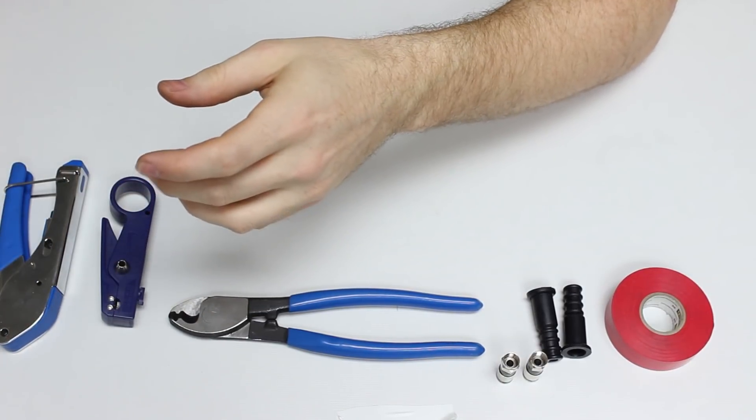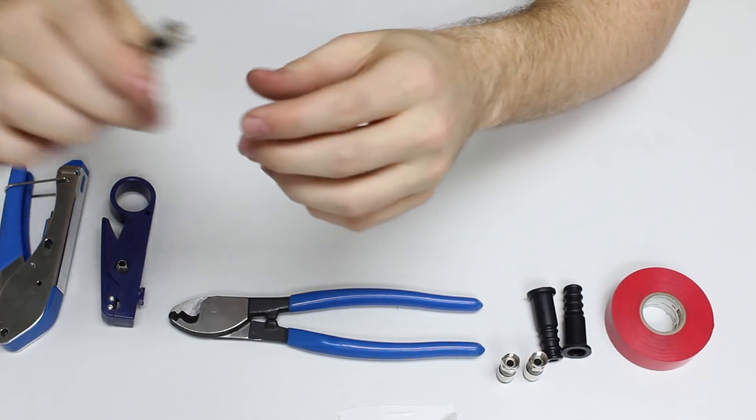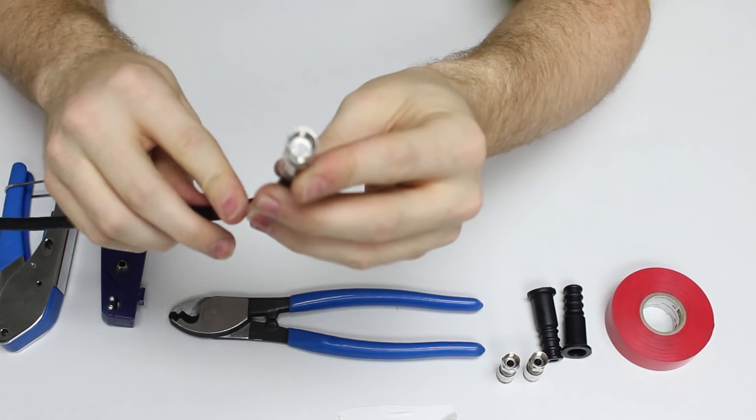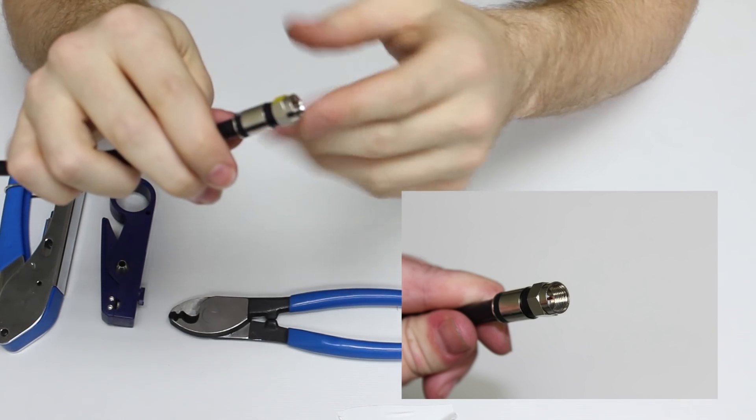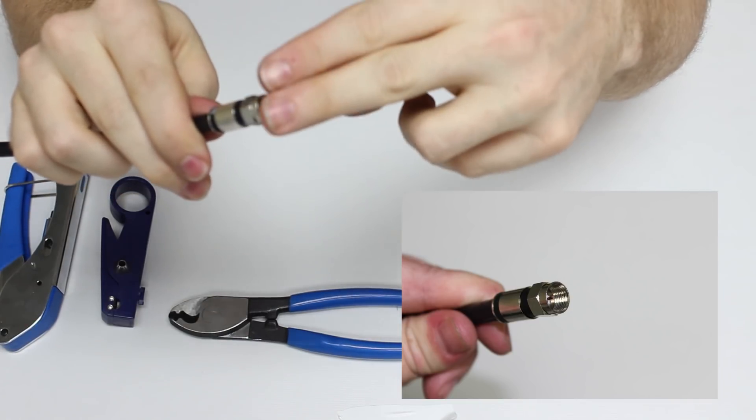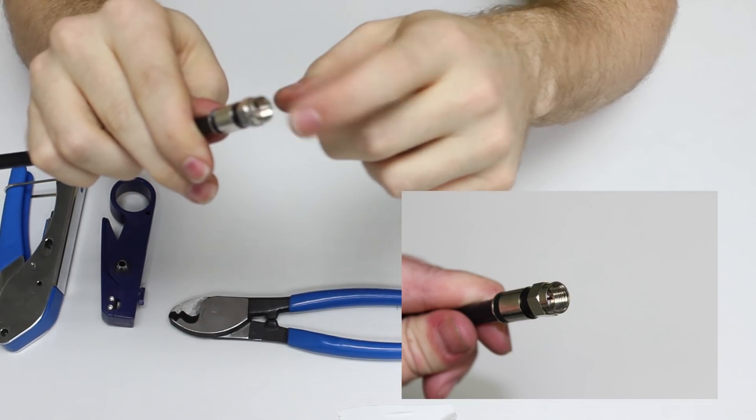Another example is the opposite of that. That's going to be where someone has taken a pair of dykes or some sort of a cutter after they have made their end and they've actually snipped it down and shortened the actual center conductor.